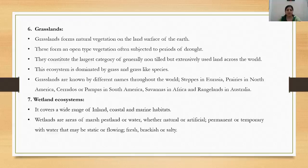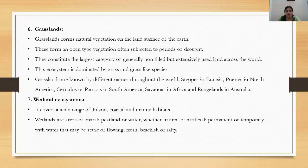The next type is the wetland ecosystem, which covers a wide range of inland, coastal, and marine habitats. Wetlands are areas of marsh, peatland, or water — whether natural or artificial, temporary or permanent, with free-flowing or static water, and including marine or fresh water. Any type of water reservoir can be included in the wetland ecosystems.